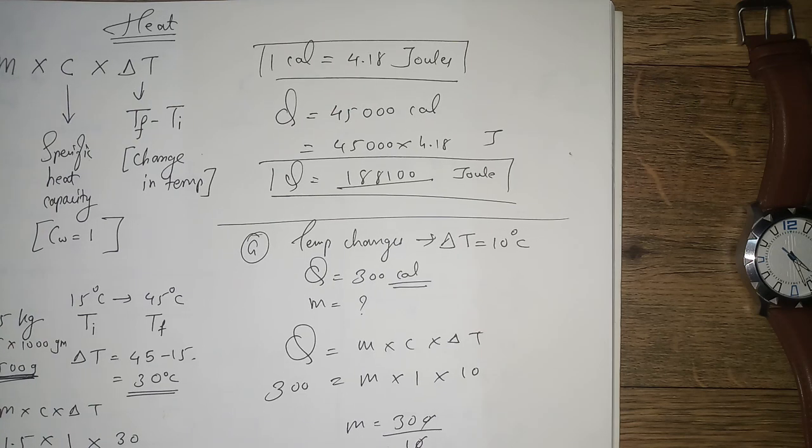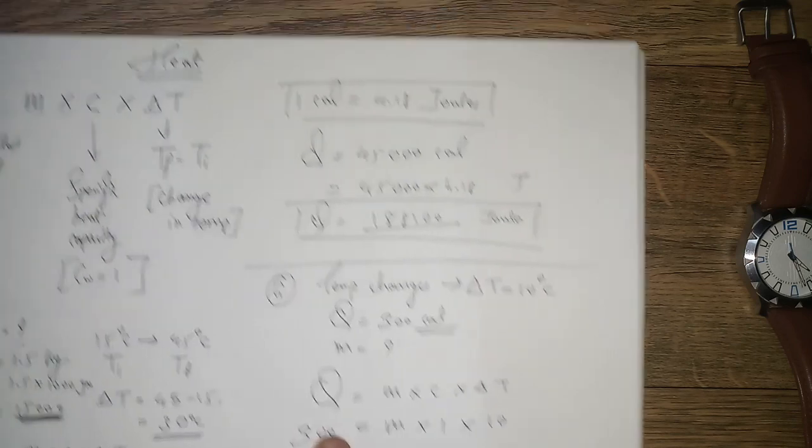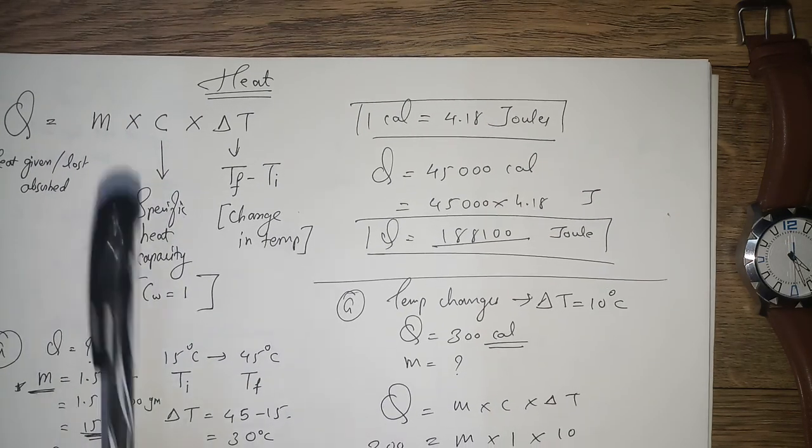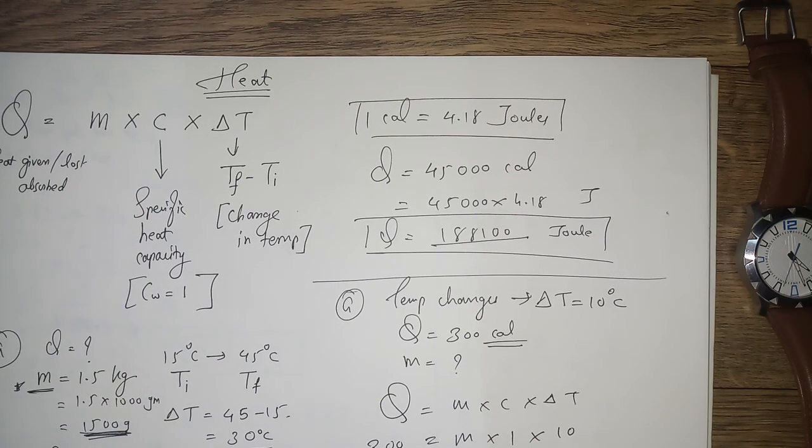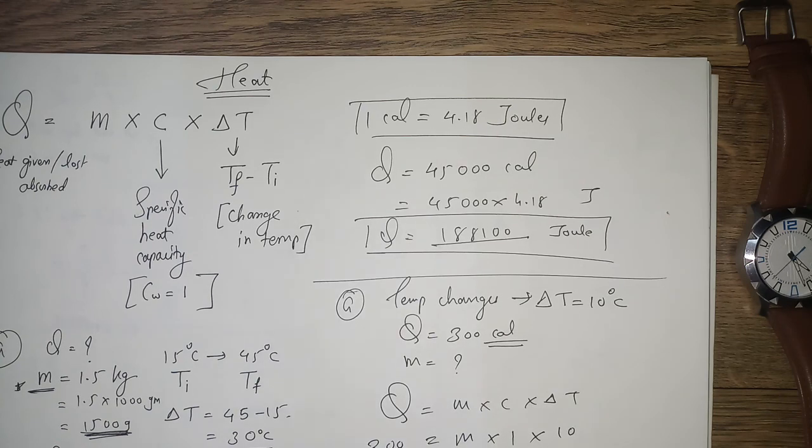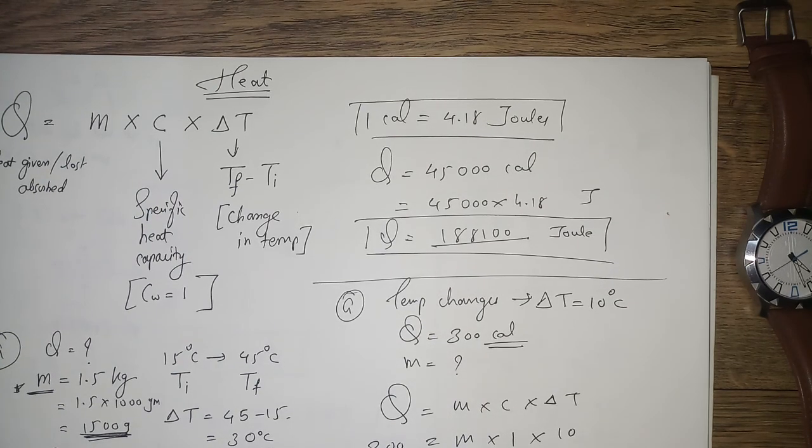You can do these problems using Q equals m times c times delta T, where delta T is change in temperature, c is specific capacity, and for water it is always one. Do your best. See you in the next video.